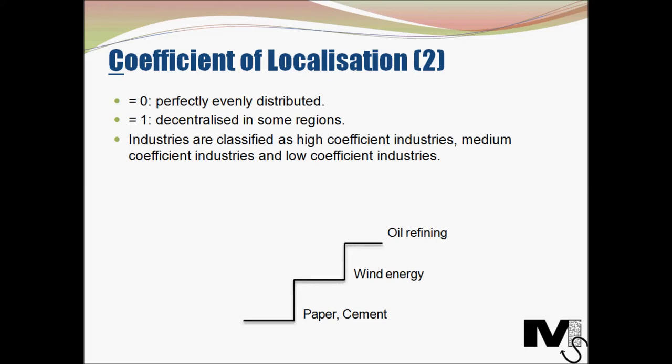This classification is one of the reasons why the Coefficient of Localization is calculated — so that we can categorize industries based on where they rank in the calculation. Examples of high coefficient industries include oil refineries, which can only be based in certain regions and cannot be based everywhere in the country. Industries like paper manufacturing, cement manufacturing, or rubber manufacturing tend to have low coefficients, as they can actually be based anywhere without requiring very specific locations.